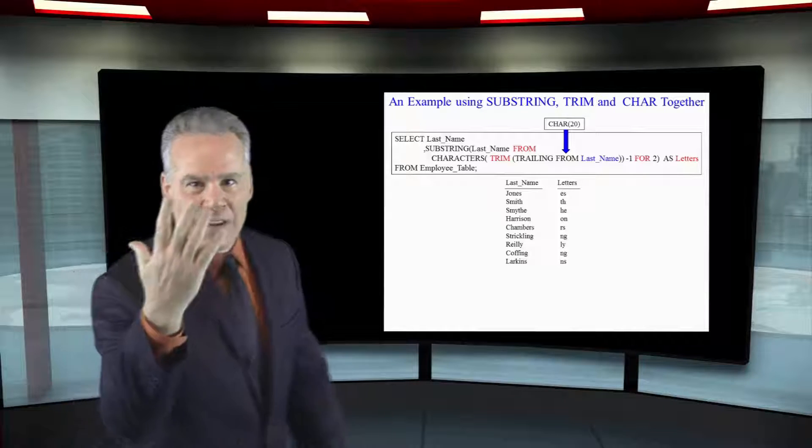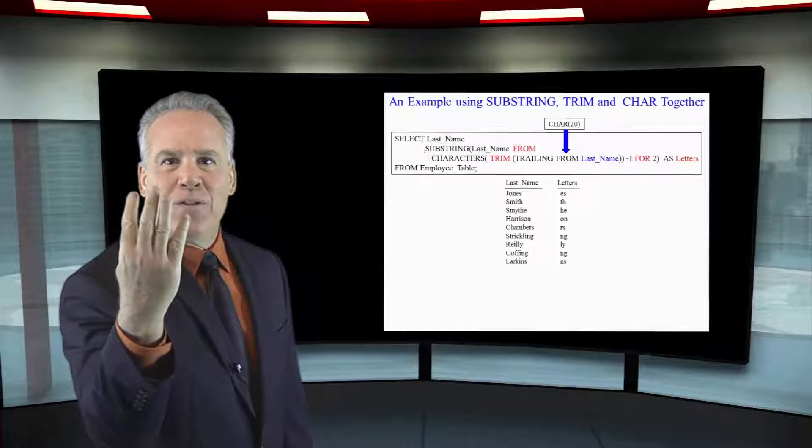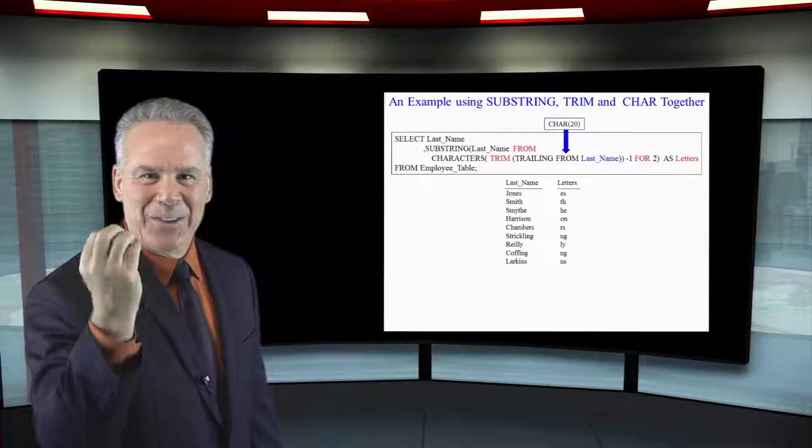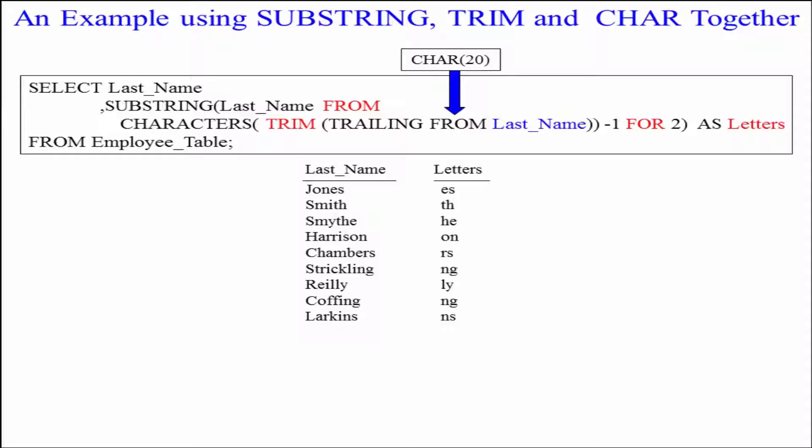Let's take the next one Smith. Well they're going to trim the spaces from Smith then they're going to count the characters in Smith S M I T H it's five again minus one starting position is four for two.